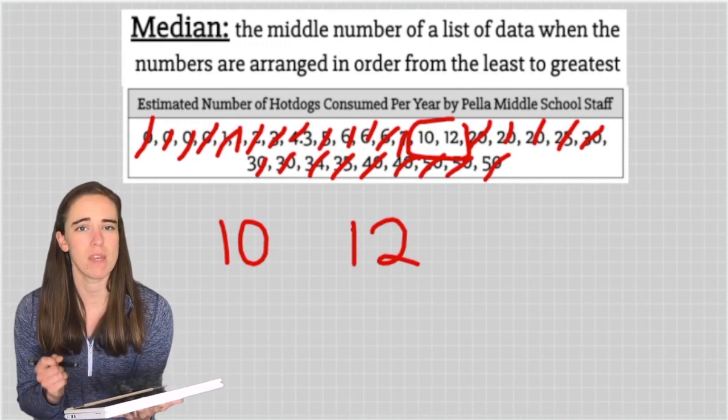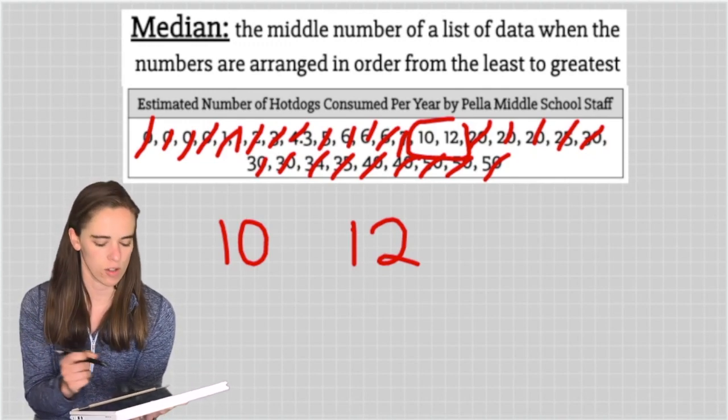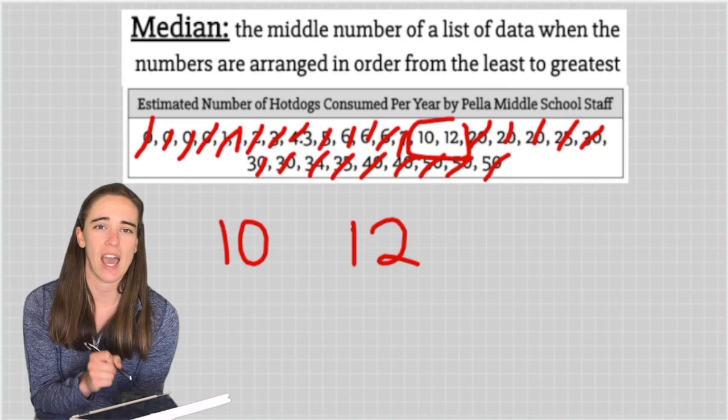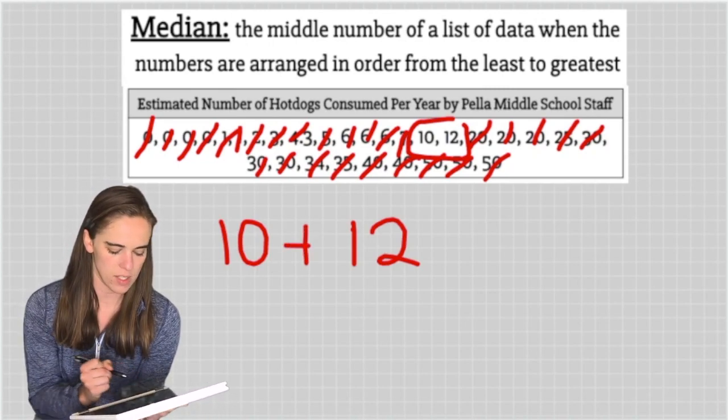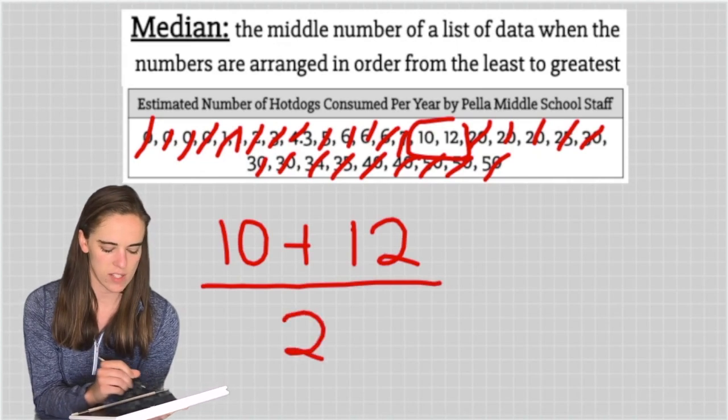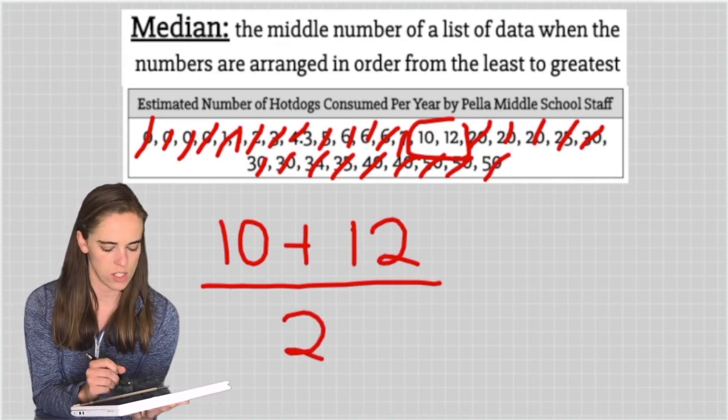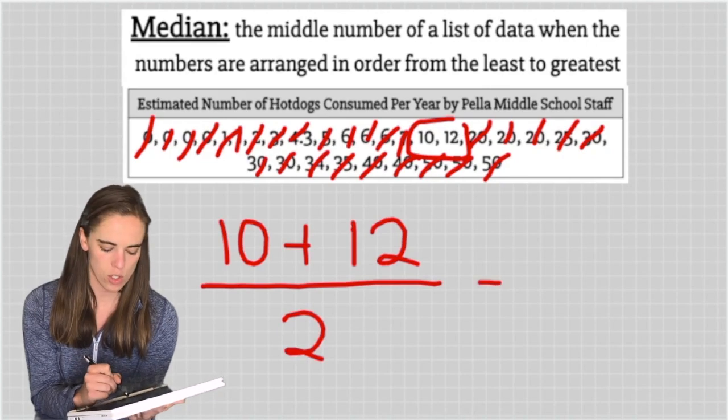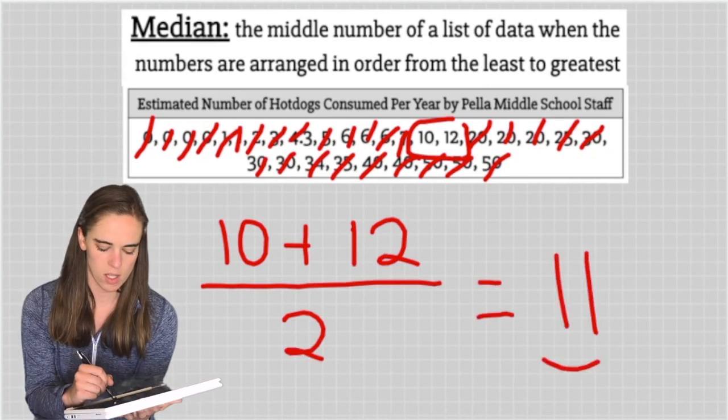In order to find the median in this case, since there's not one singular number, I need to find the average or the mean of these two, which means I'm going to add them together and then divide by 2. So 10 plus 12 is 22, and then divide by 2. My median is 11.